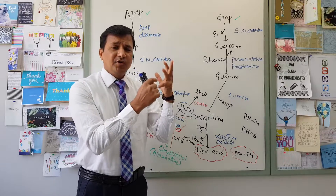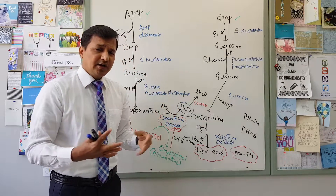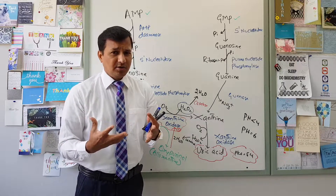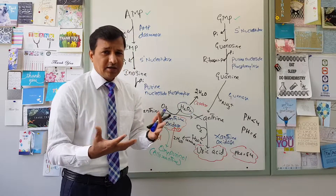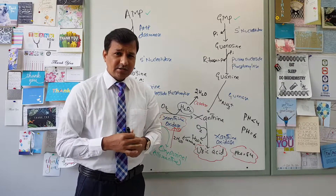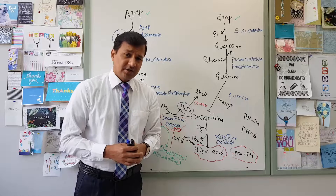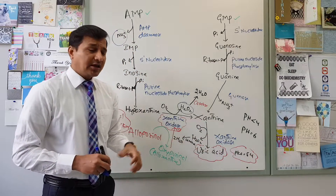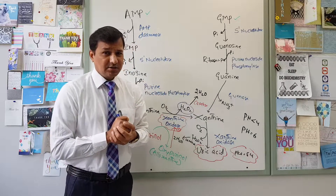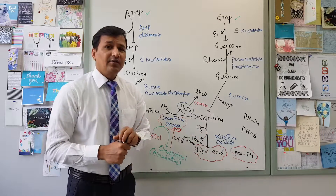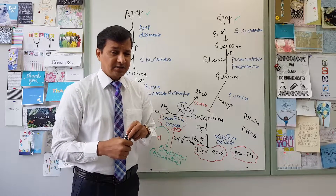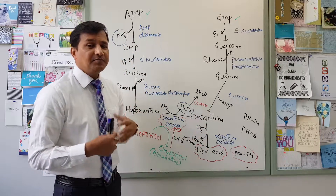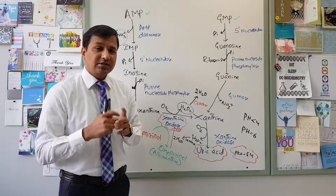Regarding pyrimidine degradation: pyrimidines — uridine, cytidine, thymidine — undergo degradation through several enzymes, but their degradation products are water-soluble molecules: carbon dioxide (a gas), ammonia (also a gas, handled by glutamate dehydrogenase), and beta-alanine, which is excreted in urine. In contrast, purine degradation produces uric acid, which can cause hyperuricemia, gout, and problems in renal failure. Uric acid has considerably more clinical effects than the water-soluble products from pyrimidine degradation.